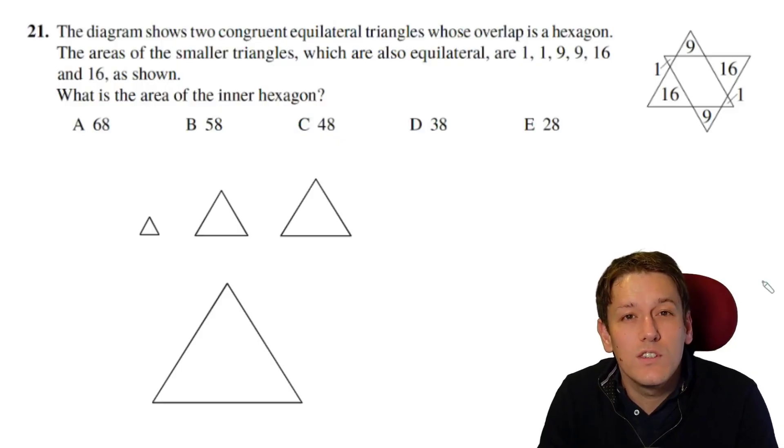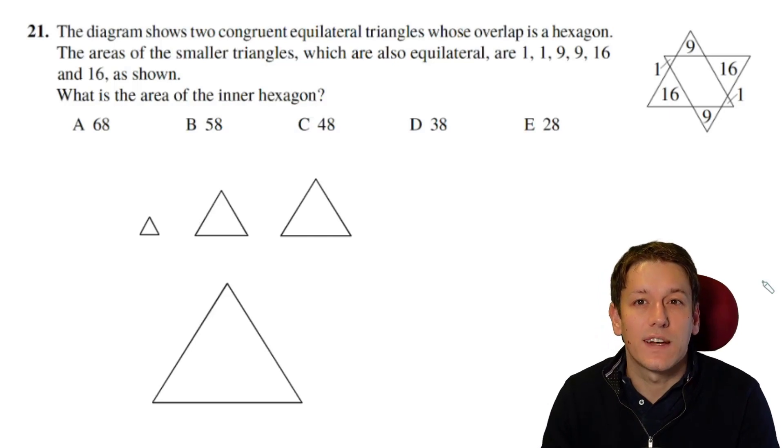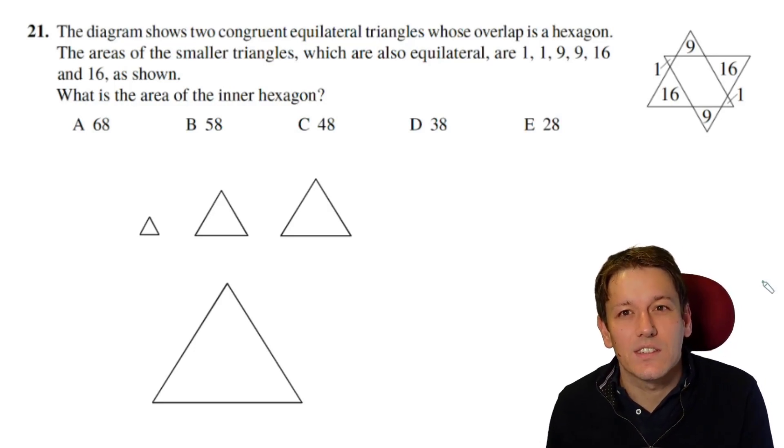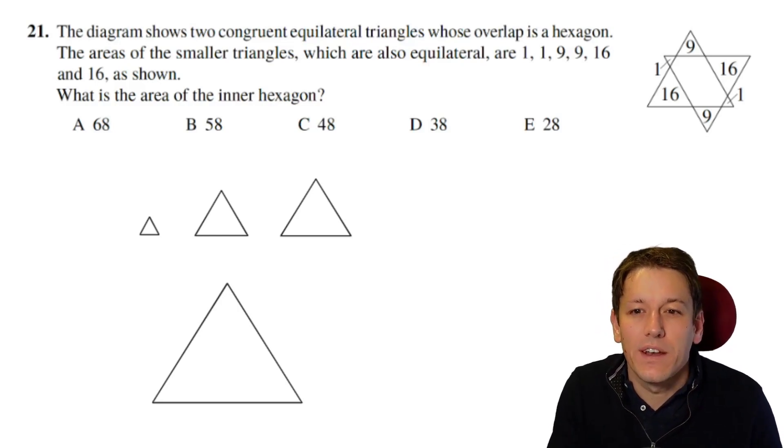The key result we want to use here is one about area scale factors. That says if you've got similar shapes, that the areas scale up in proportion to the square of the way that the lengths scale up. I'll show you in the context of this question what I mean by that now. So we've got these four types of triangle. We've got the one that's got area 1, we've got one that's got area 9, we've got one that's got area 16, and then if we could work out the area of the big triangle, we could work out the area of this inner hexagon.